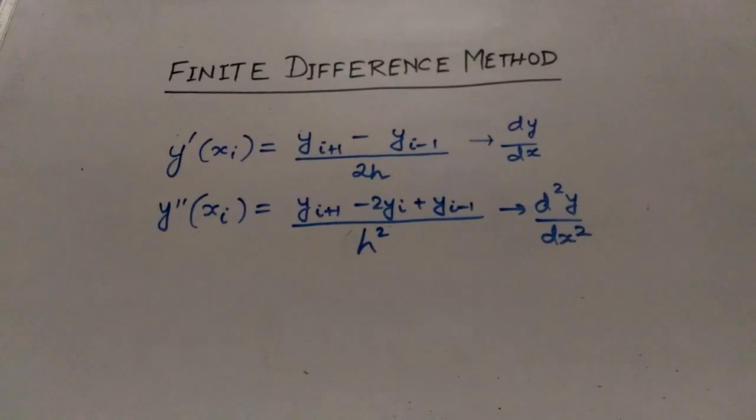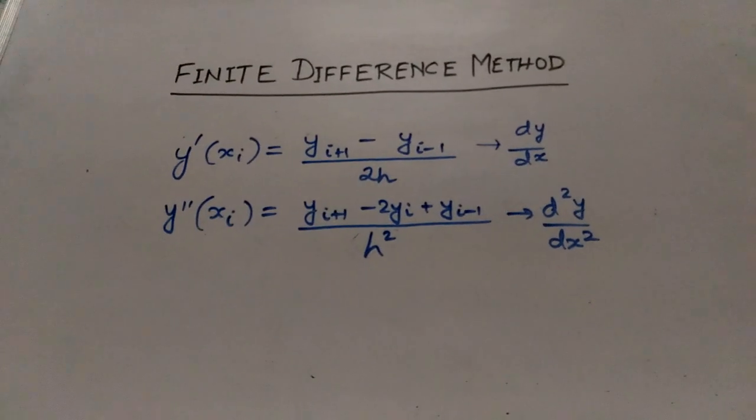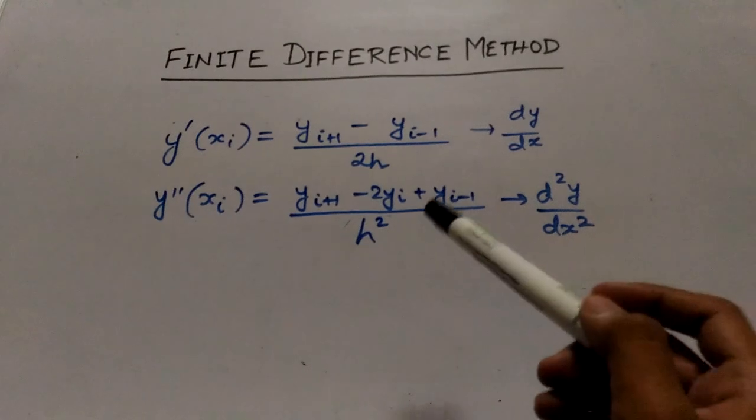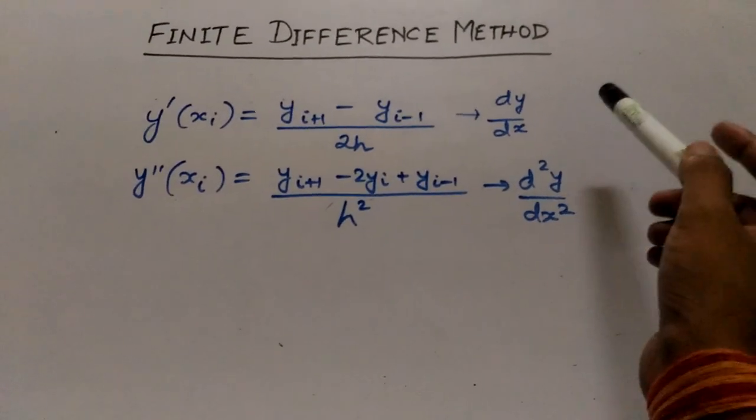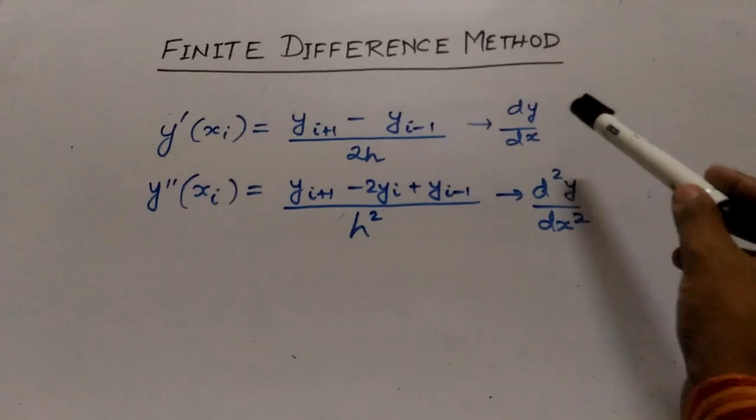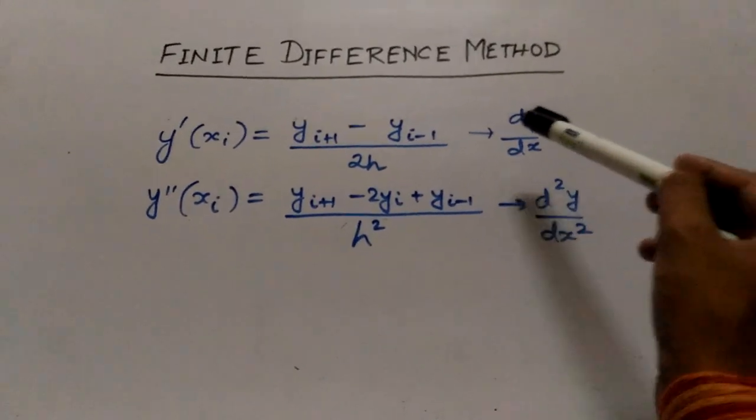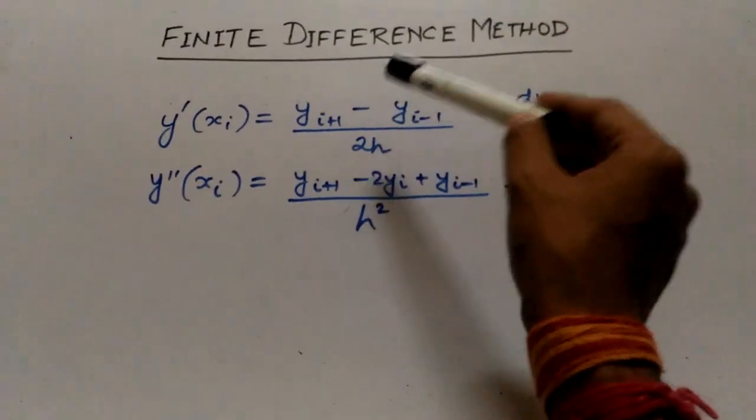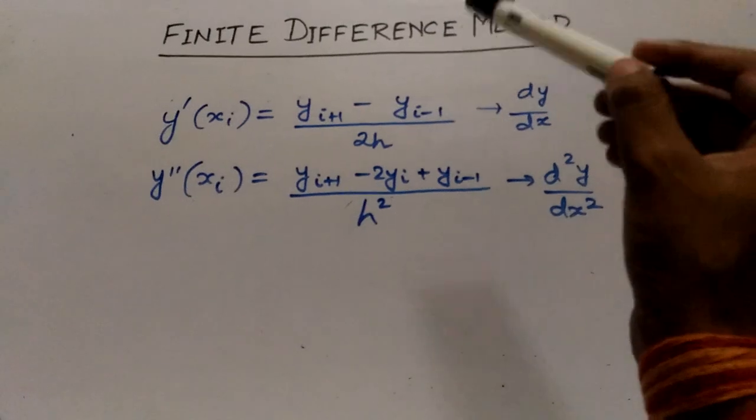In this method, you have to replace the differential notation with some expressions. If the notation given is dy/dx, that is the degree is 1, then you have to replace it by this expression: y_{i+1} minus y_{i-1} divided by 2h.